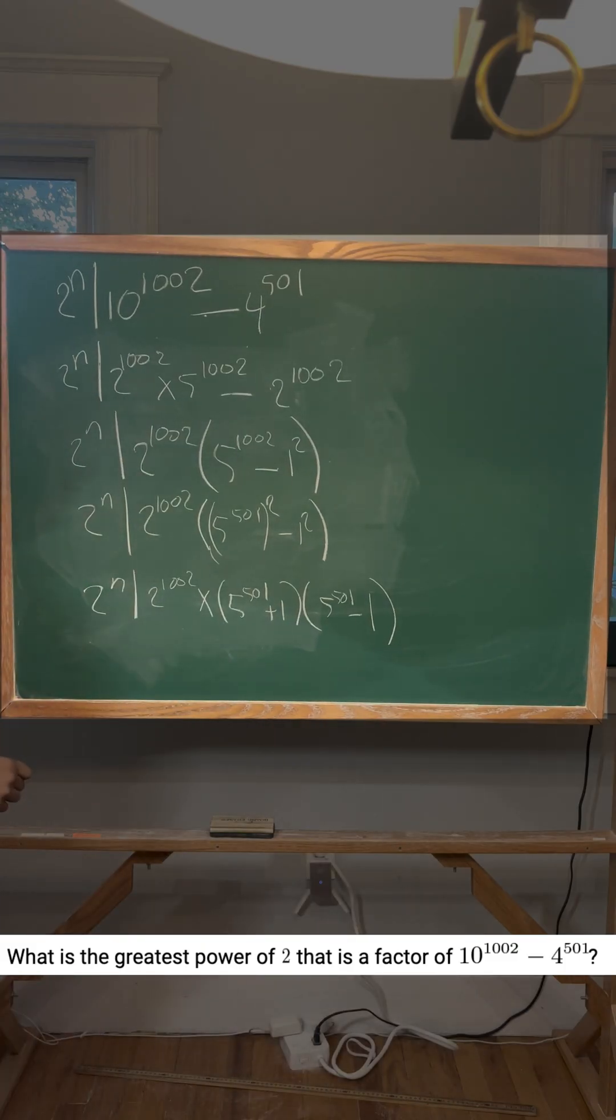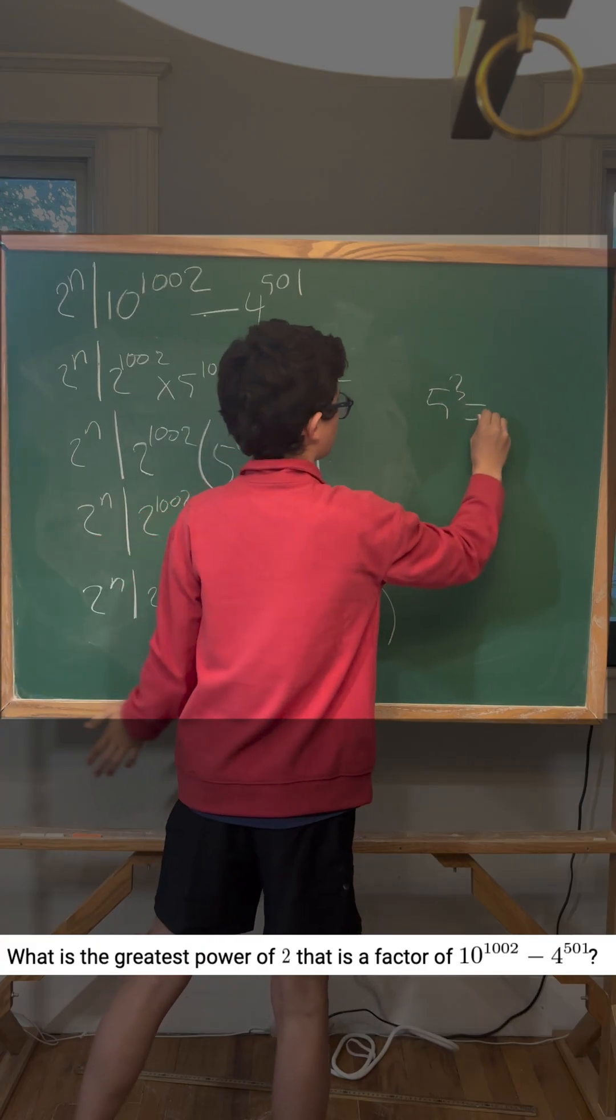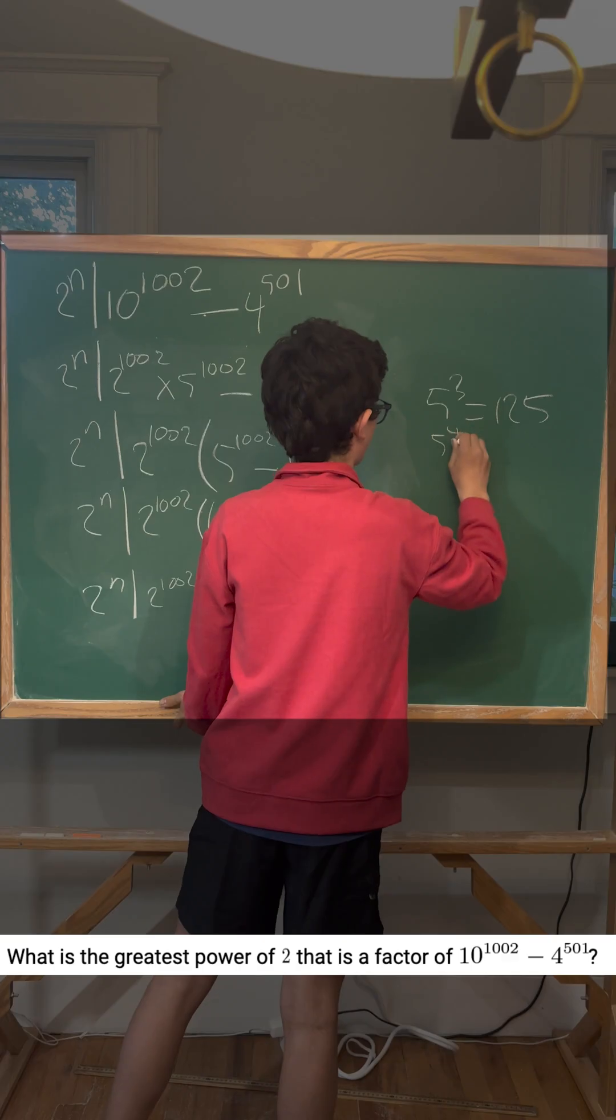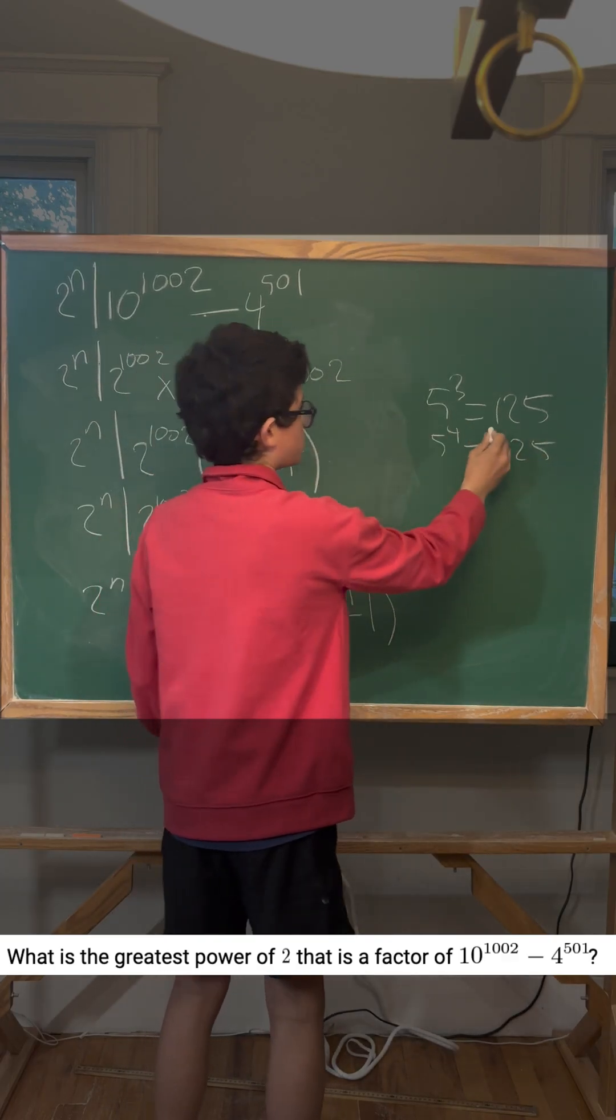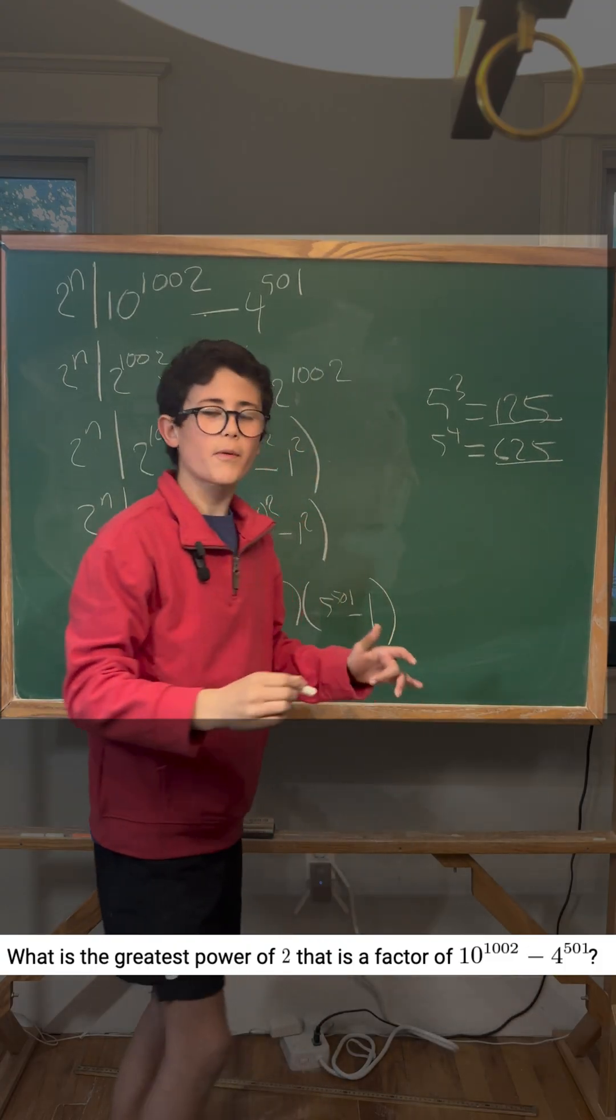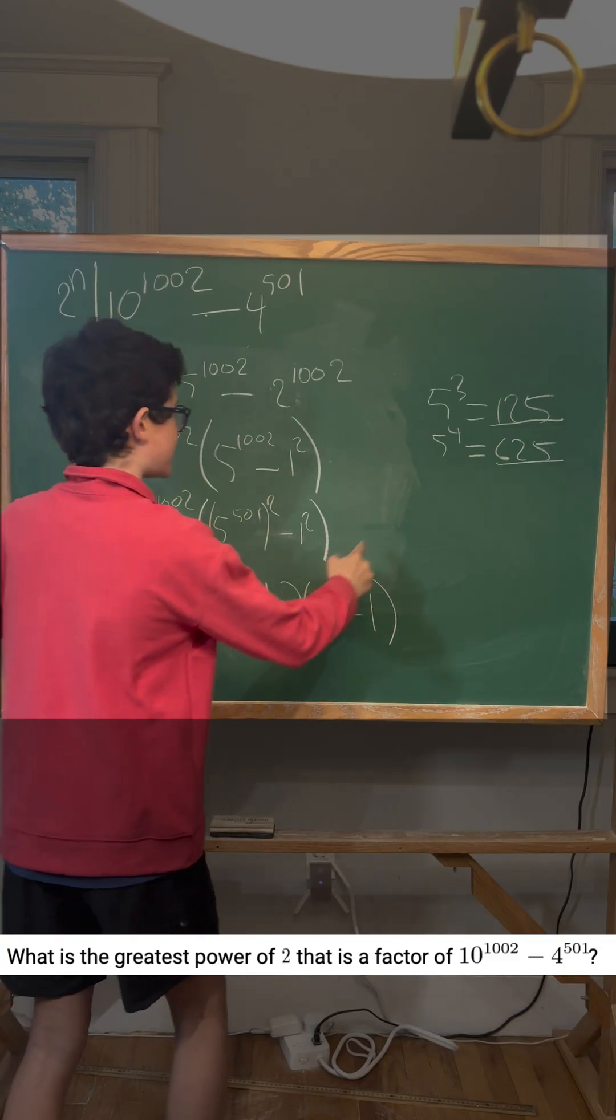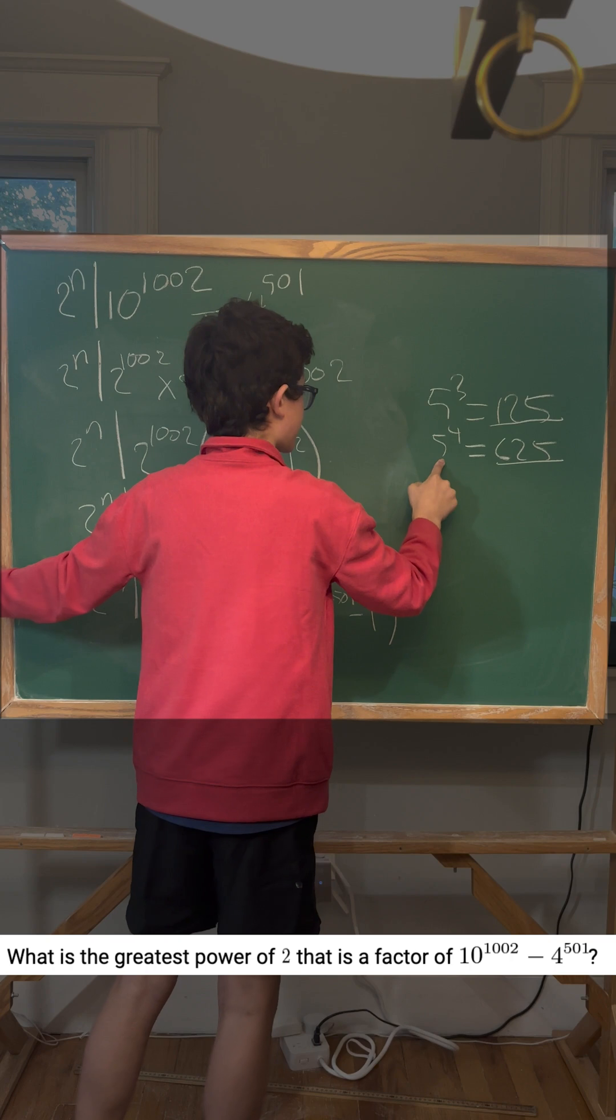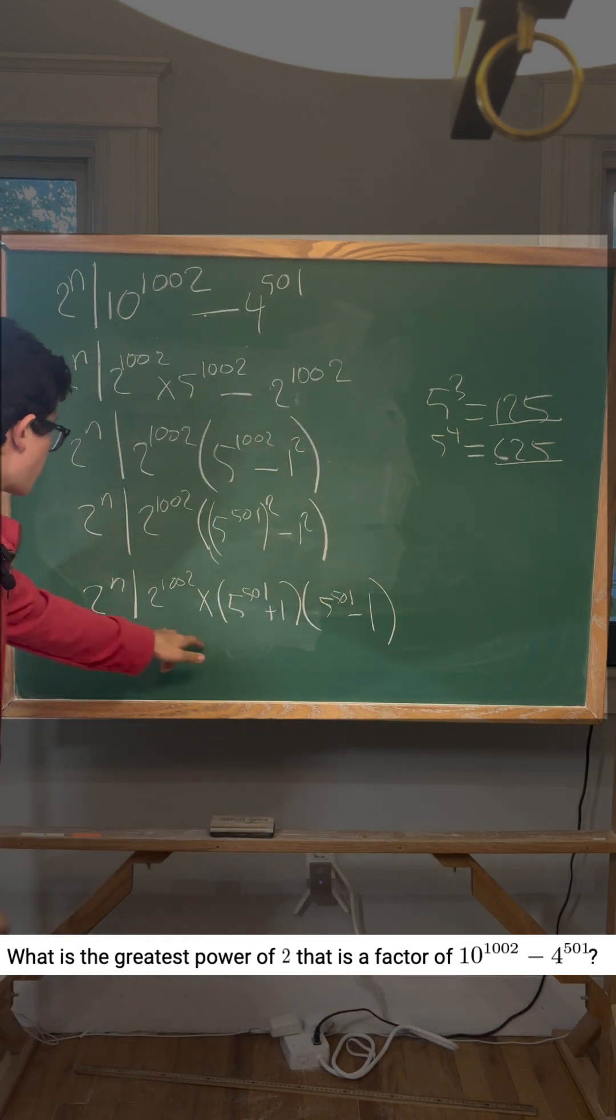Okay, so we know that 5^3 equals 125 and 5^4 equals 625. And this pattern will just keep repeating as you do 5^5 and etc. Right? So we see that this exponent odd, so it'll be 125. This exponent is even, so it'll finish by 625. So we can apply that to this.